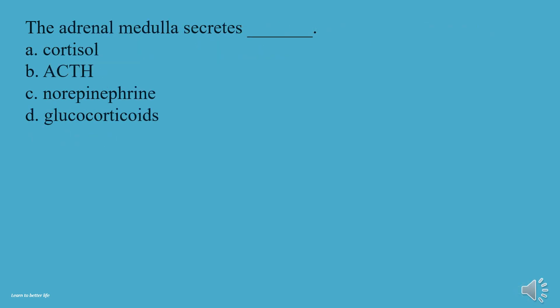The adrenal medulla secretes what? A, Cortisol. B, ACTH. C, Norepinephrine. D, Glucocorticoids. The answer is C, Norepinephrine.